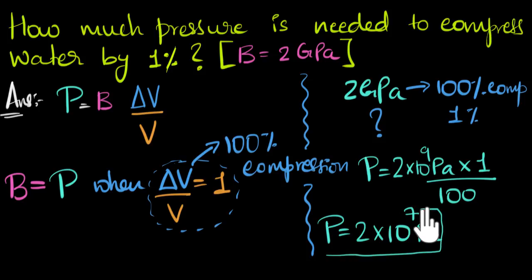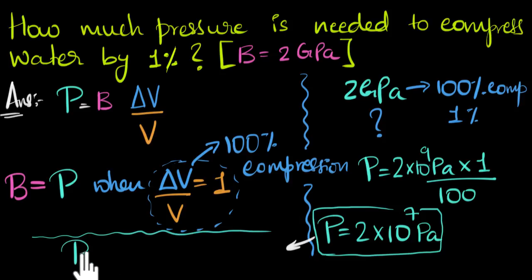And now just to give you a feeling for how big this pressure is, we can write this a little differently. We'll write this as P equals 10 to the power of seven, which can be written as 10 to the power of two times 10 to the power of five.